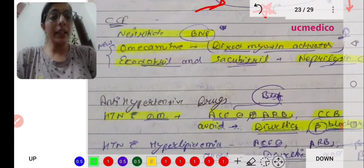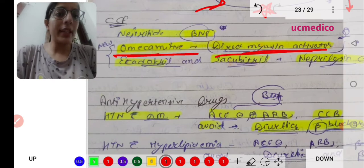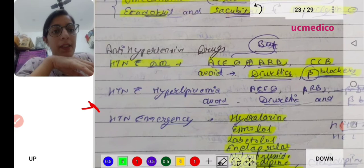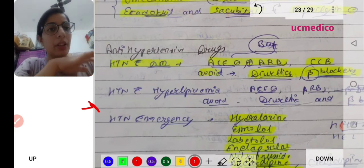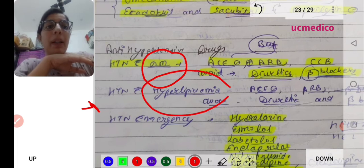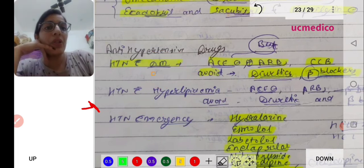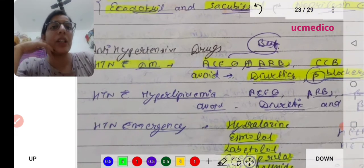Omecamtiv is a direct myosin activator. Let's see about anti-hypertensive drugs - conditions of hypertension with other diseases like diabetes mellitus, hyperlipidemia, and hypertensive emergency.